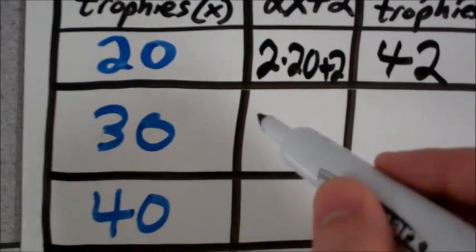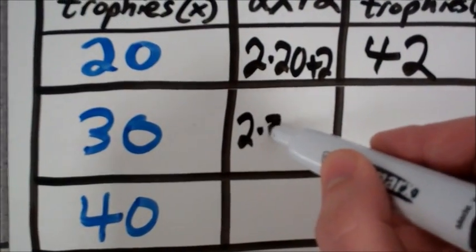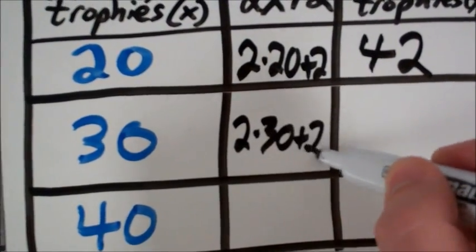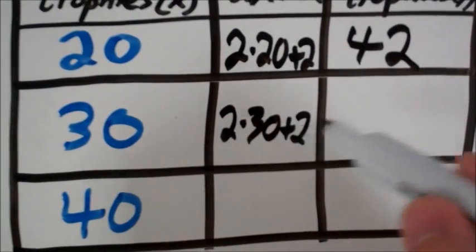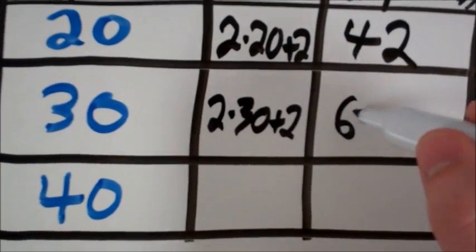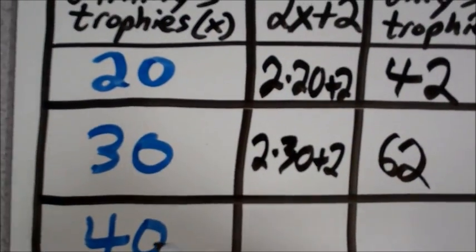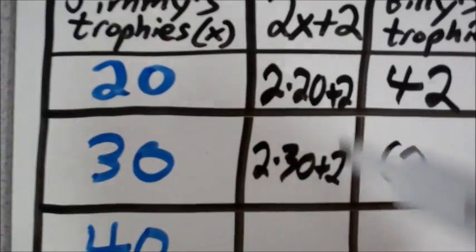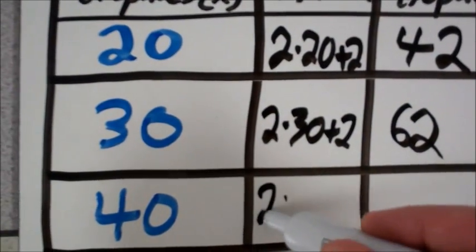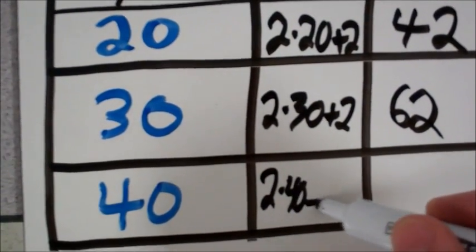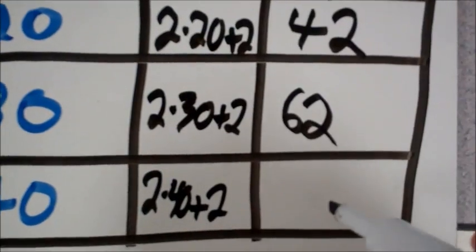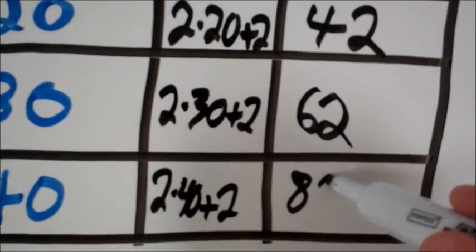Our next number we're plugging in is 30. So we have 2 times 30 plus 2. And 2 times 30 is 60 plus 2 is 62. Lastly, we're plugging in 40. Remember that 40 plugs in for our x in our function. 2 times 40 plus 2, which is 82.